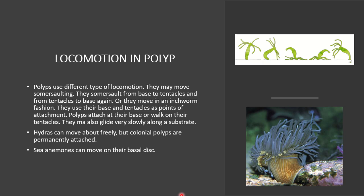Polyp is a sessile form — it is attached to one place — while medusa is free-swimming, so the locomotion is also different. Polyps are attached to a substratum, so their locomotion is usually not much. They crawl, glide, or perform somersaulting.